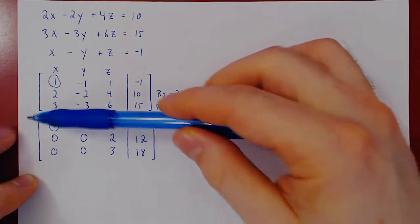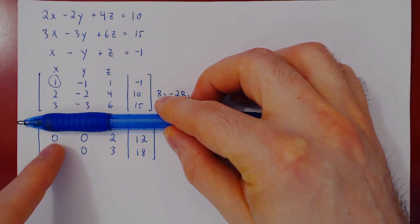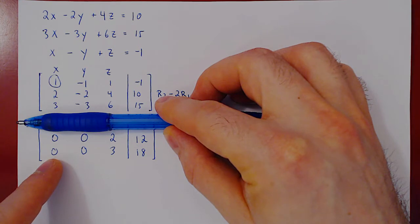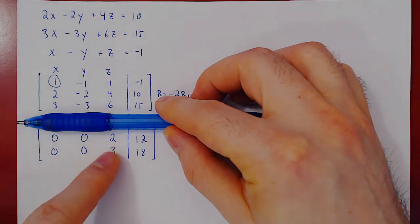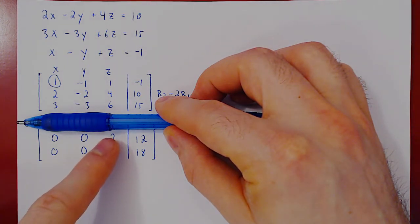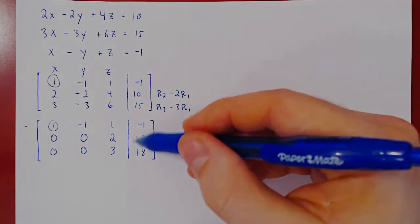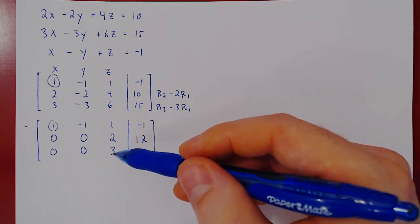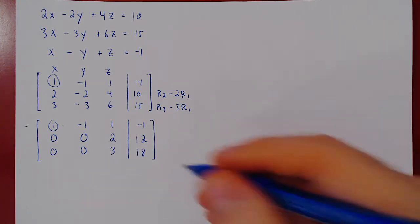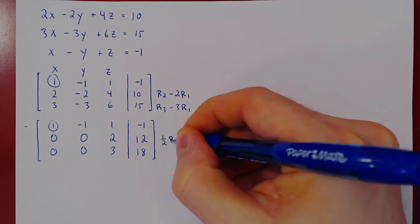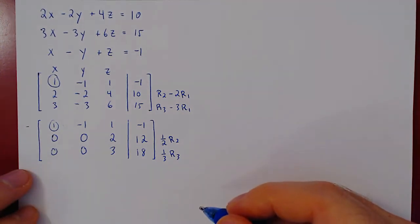We have our first leading one and we've killed the entries below it. Now we move on and try to get a leading one in the top row of the remaining submatrix, starting from the leftmost column. The first two columns have all zeros, so we can't get a leading one there. The third column has non-zero entries and we can easily get a leading one. We can multiply row two by one half since twelve is divisible by two, and row three by one third since eighteen is divisible by three.